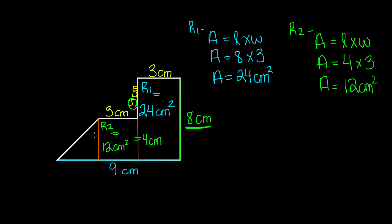Now let's find the area for this triangle. We know that the total base of this irregular shape is 9 centimeters, and the other two lengths are 3 centimeters each. So 3 plus 3 equals 6 centimeters. We subtract 6 centimeters from 9 centimeters, and now we know that the base of this triangle is 3 centimeters.